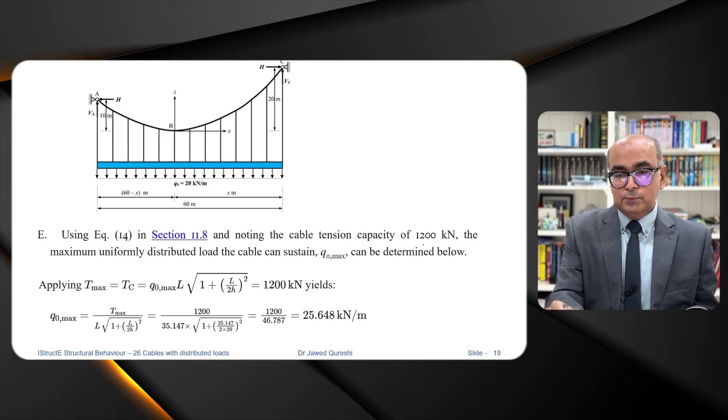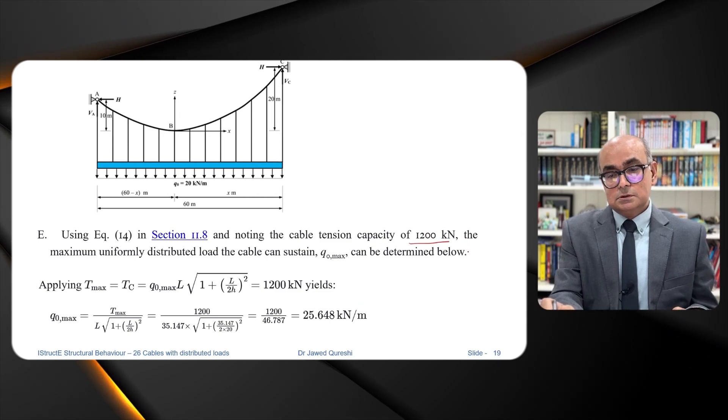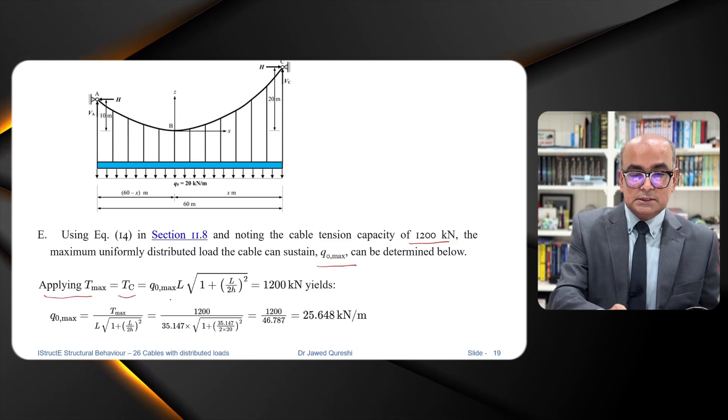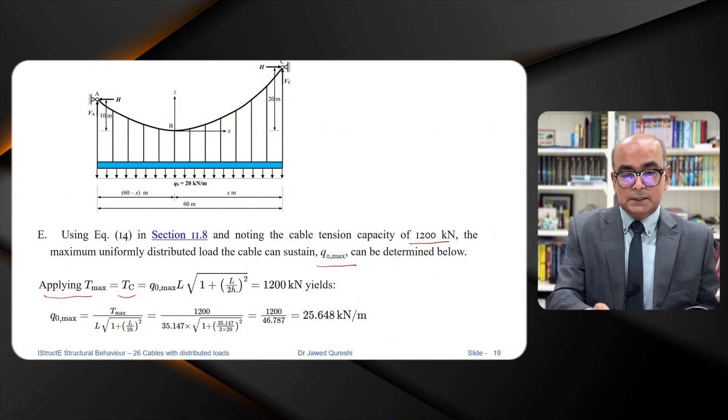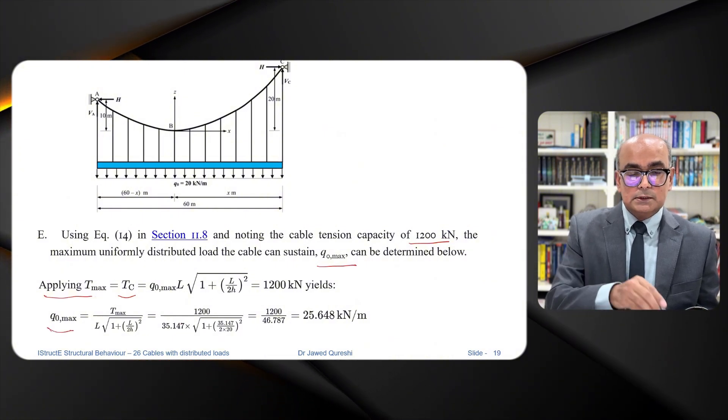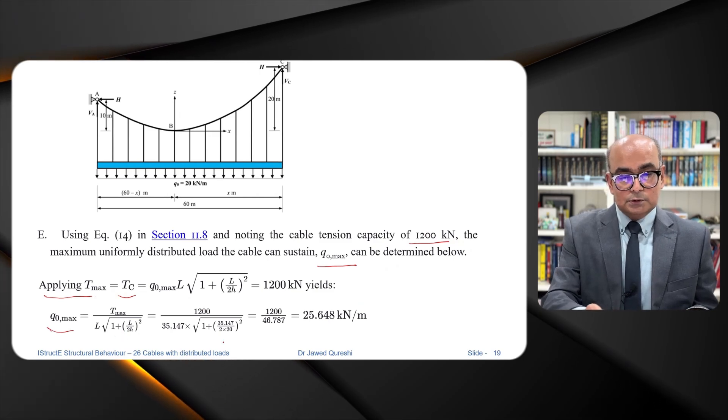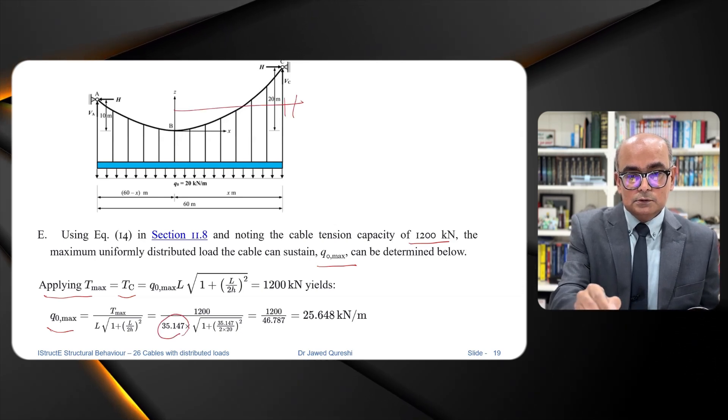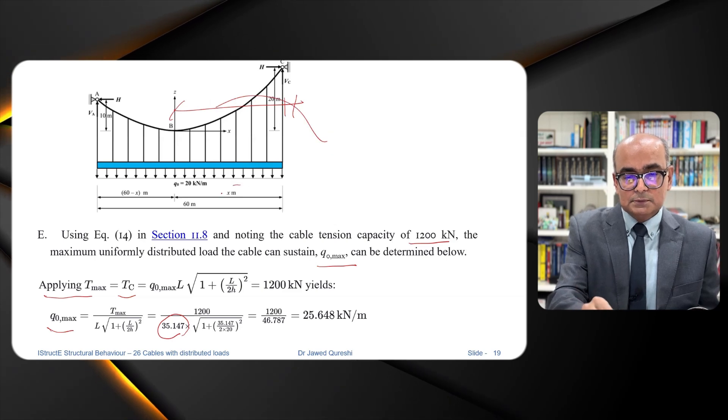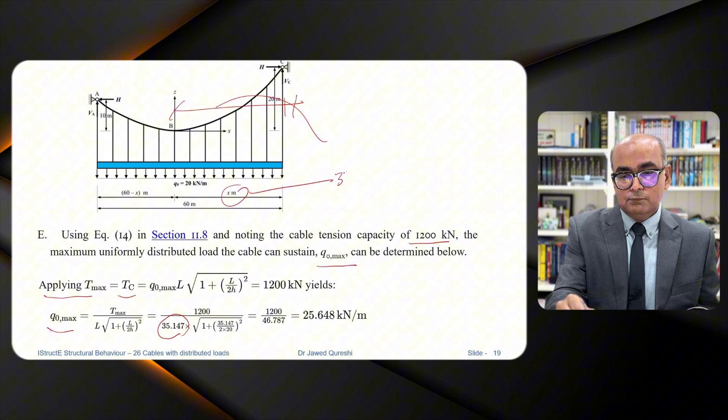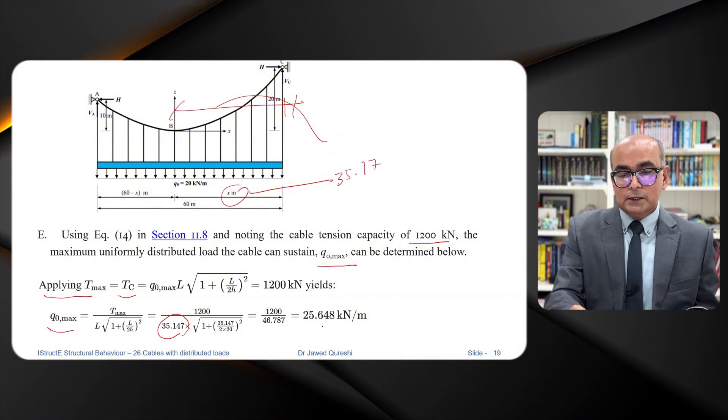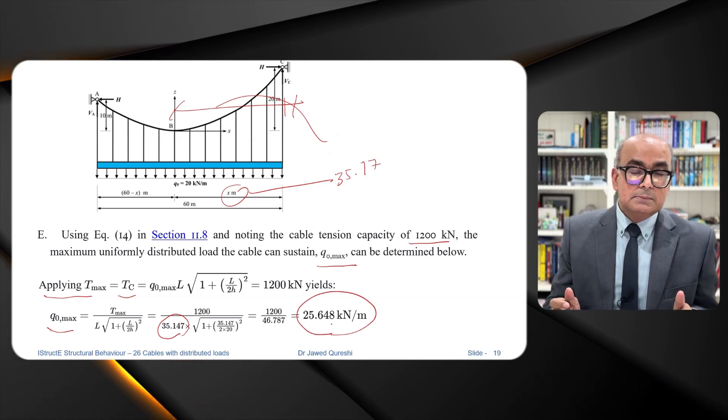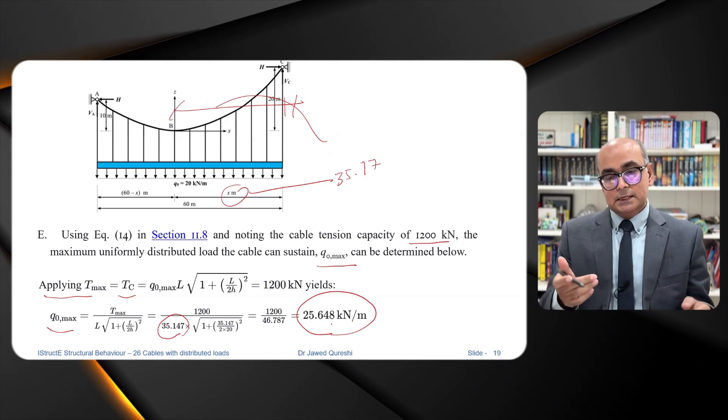Part E says that if we have 1200 kilonewton maximum tension what would be Q max. Now here applying T max is equal to TC which is Q naught L over 1 plus L over 2H. From here we get Q max as T max over L times 1 plus L over 2H. Remember that here L is a distance from here to the end which was 35 point something distance x which is 35.17. From here we get value of 25.64 kilonewton meter. The applied loading was 20 but the maximum capacity the maximum this cable can take is 25.6.